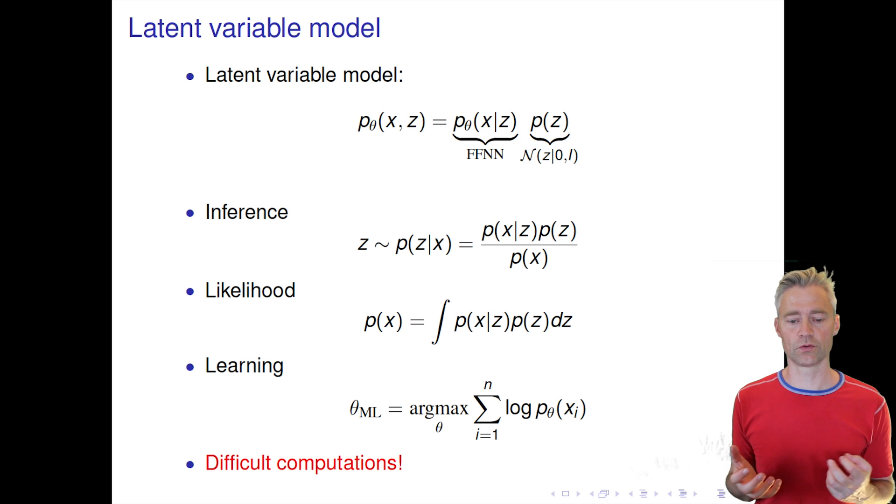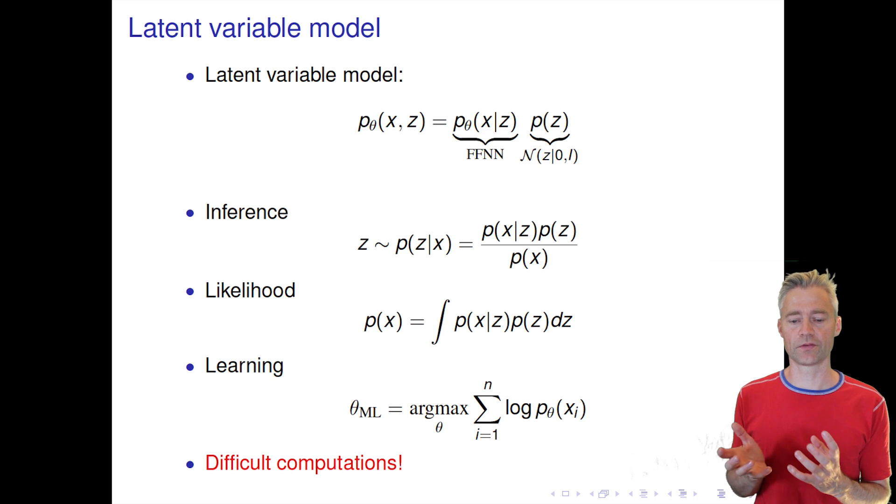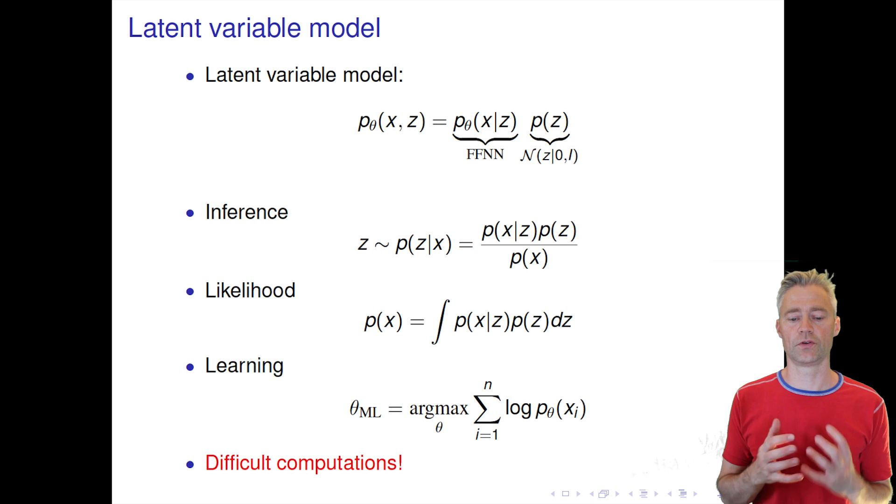It's also difficult to calculate the likelihood for this model. p(x,z) is what is called the complete likelihood, but since we have not observed z, then in order to get the actual likelihood we have to integrate out z. So that's what we have in this expression here. And this integral is a complicated multi-dimensional integral. If for example we have chosen z to be 50 dimensional then it's an integral over 50 dimensions for each x, for each example.